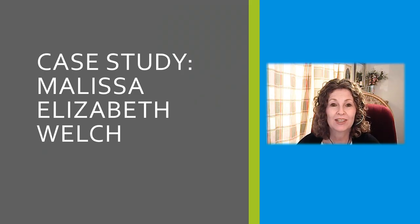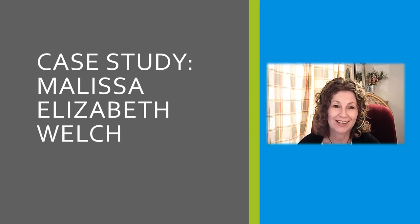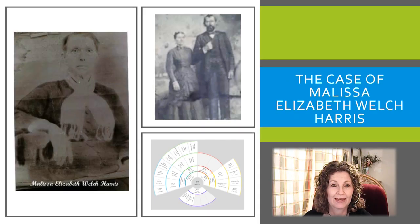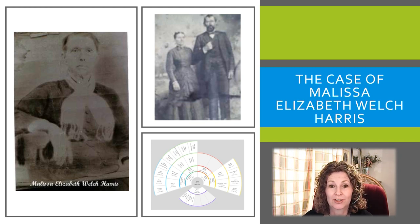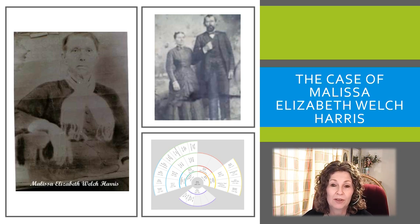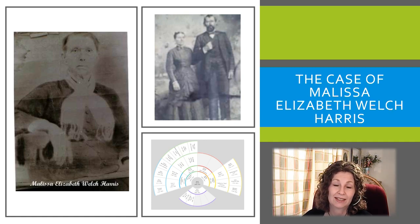Today we're going to look at an example of my second great-grandmother — finding her parents. Her name was Melissa Elizabeth Welch. When I first started my research I started with my paternal line, and this line followed a pattern: everyone was in California, then moving back in time they were in Oklahoma, then Indian Territory, then Texas. From Texas the lines diverged to all places south.